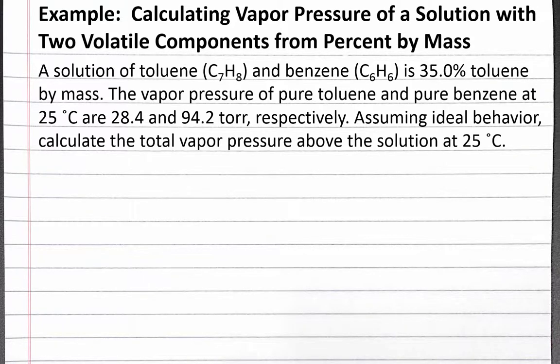In this example problem, we calculate the vapor pressure of a solution with two volatile liquids given percent by mass of one component in the solution. The problem reads: a solution of toluene and benzene is 35% toluene by mass. The vapor pressure of pure toluene and pure benzene at 25 degrees Celsius are 28.4 and 94.2 torr, respectively. Assuming ideal behavior, calculate the vapor pressure above the solution at 25 degrees Celsius.